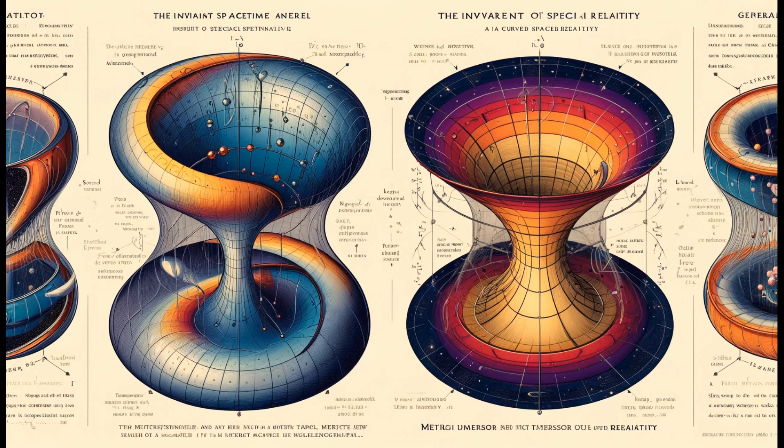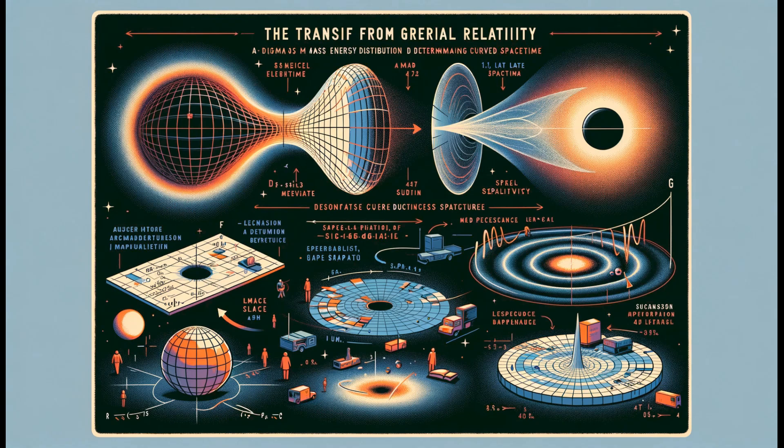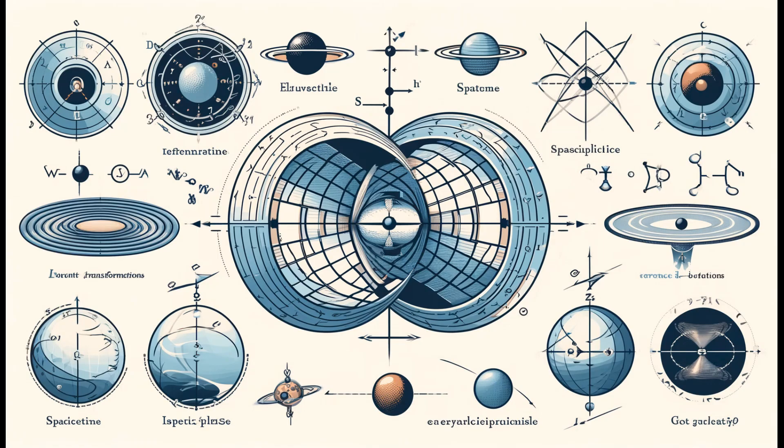General relativity replaces the flat spacetime of special relativity with a curved spacetime framework, where the curvature is determined by the distribution of mass and energy. The equivalence principle supports this transition by suggesting that the effects of gravity can be eliminated locally by choosing an appropriate reference frame. This local flatness is compatible with the notion that in the infinitesimal limit, spacetime can be approximated as flat and the laws of special relativity hold.